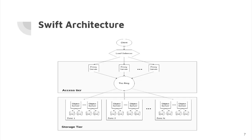This is the basic block diagram of Swift architecture. Whenever a client sends a request for any data, a load balancer — such as Apache or Nginx — balances the load and sends the request to the access tier of the Swift architecture, which consists of proxy servers and the ring. Their combination helps redirect the request to the particular storage container where our data is stored. The ring structure maps partitions to which storage container the data is stored in.